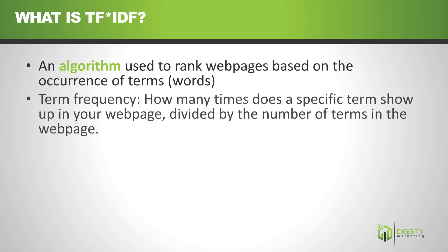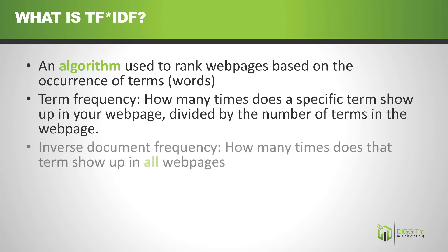The term frequency part is basically how often you use certain words divided by the number of words — so the density. The inverse document frequency offsets the importance of words that don't matter, like 'the' or 'and,' and the equation looks like this.